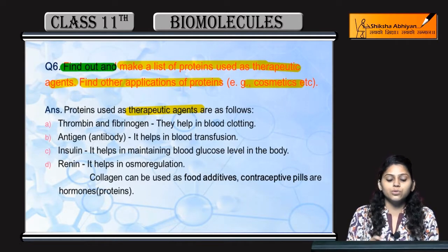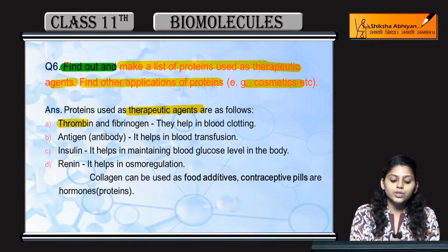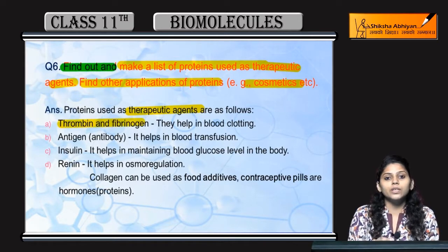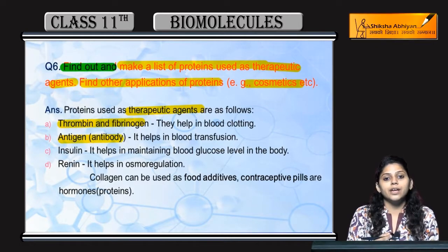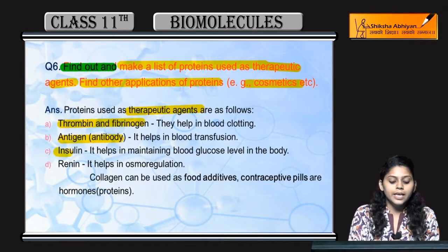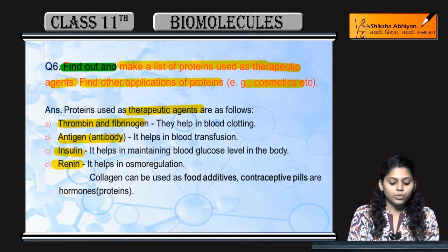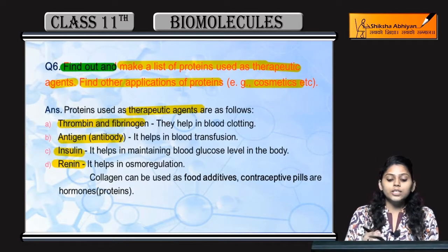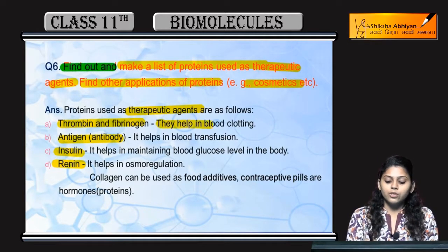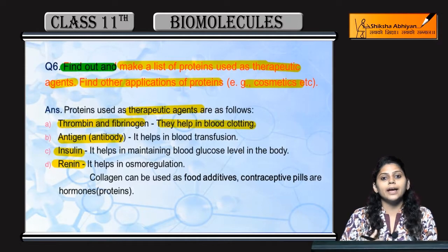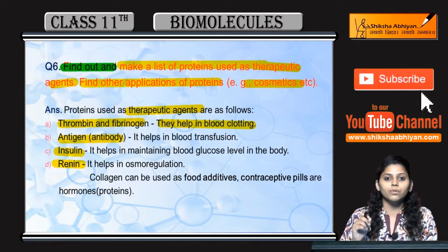First, let's talk about proteins used as therapeutic agents. The first one is thrombin and fibrinogen. The second is antigens and antibodies. The third one is insulin, and the fourth one is renin. Thrombin and fibrinogen help in blood clotting — when there is excess bleeding, clot formation is used to prevent bleeding.